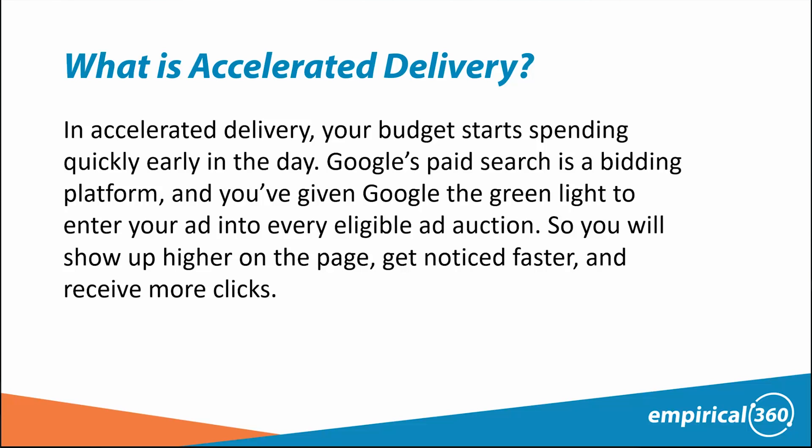Accelerated delivery, which is very underutilized because it is not the default setting in Google, is a setting where Google spends your budget as quickly as the volume comes in. So regardless of your ad schedule, Google will spend your money within the first 10 minutes, within the first hour of the day, just as volume comes in. This is ideal if you are trying to scale a campaign that you don't think you can get any more volume out of. If you have a top performing campaign and you just want as much volume from that campaign as possible, you're going to want to use this setting.